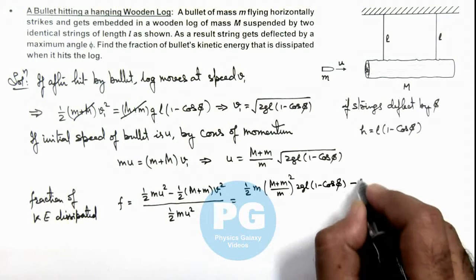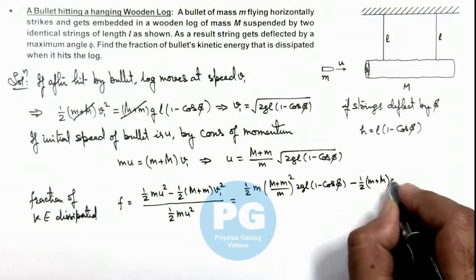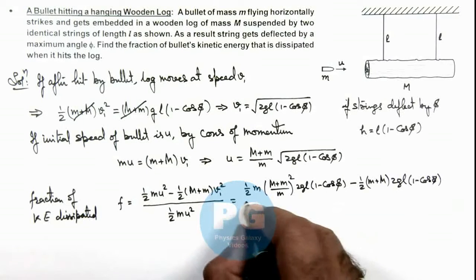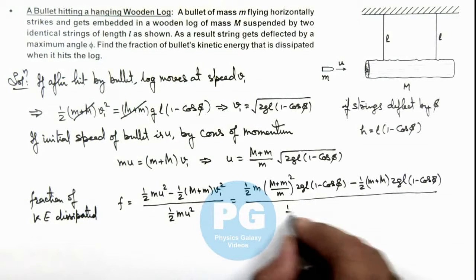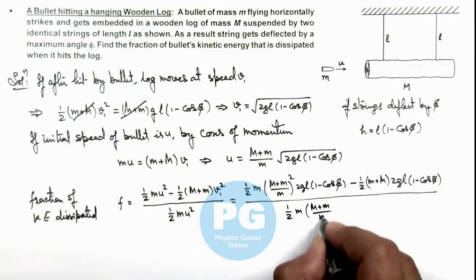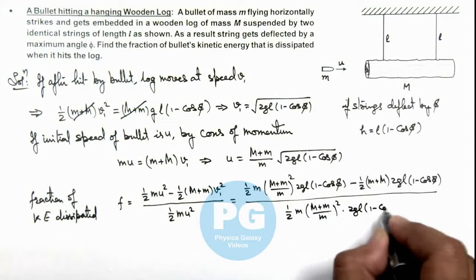Minus ½(m + M) × v² which is 2gl(1 - cos φ), divided by initial kinetic energy which is ½m × [(m + M)/m]² × 2gl(1 - cos φ).